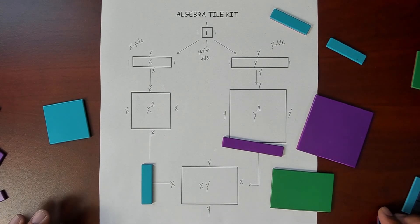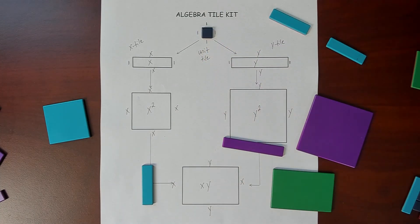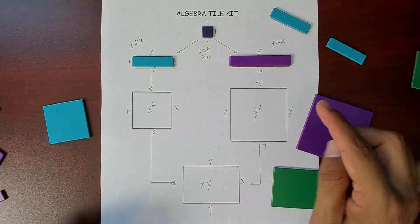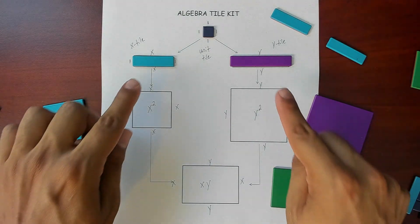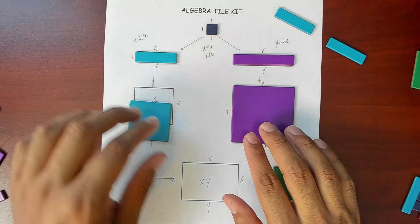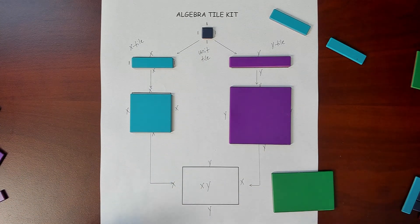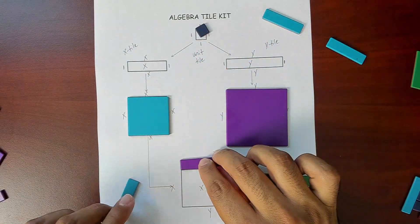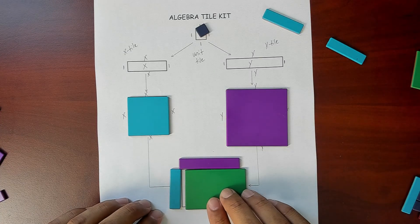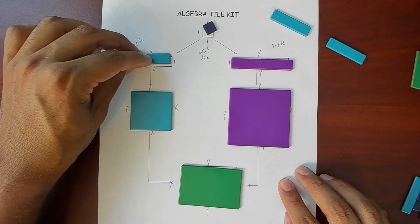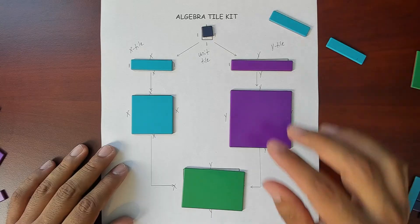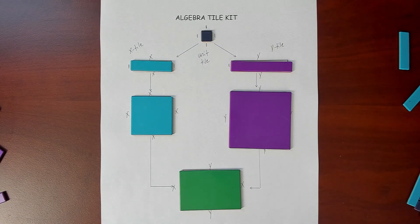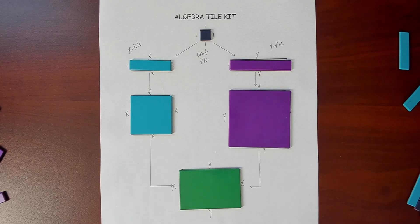Let me do a quick recap. We have our unit tile with all sides of one. Our x tile has sides of one and x. Our y tile has sides of one and y. Using those tiles as borders, we create our x squared and y squared tiles. And combining x and y side lengths gives us our xy rectangle. This is just an introduction to algebra tiles — in the next videos we'll see how to use them to solve equations and simplify expressions. It's the math magician, and I'll see you in the next video.